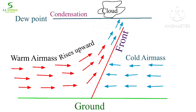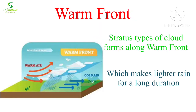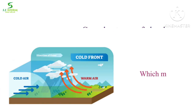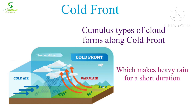The water droplets of the cloud start to become larger in size by mixing with one another, and when they are too heavy to hold they fall on the earth near the frontal area as rain — this is called frontal rainfall. When warm air rises along the warm front it forms stratus-type clouds, which produce lighter rain for a long duration. When warm air rises along the cold front it forms cumulus-type clouds, which produce heavy rainfall for a short duration.